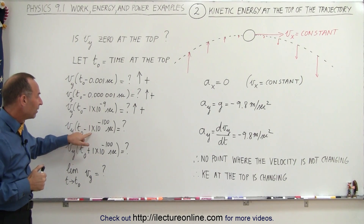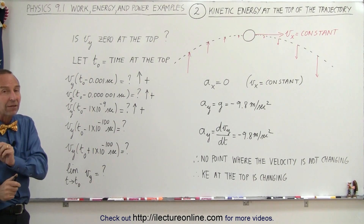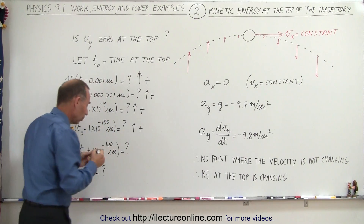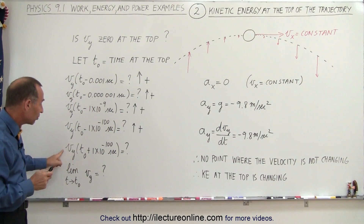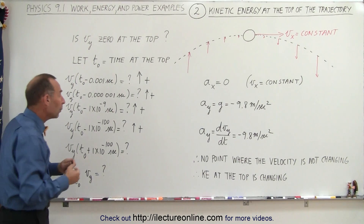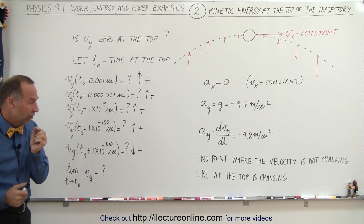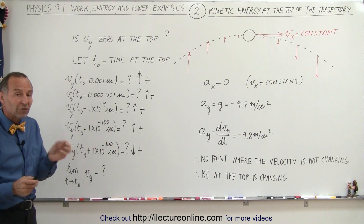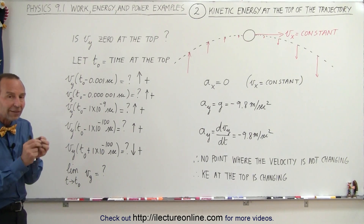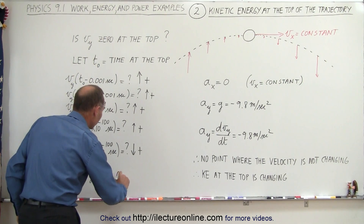What if we look at the velocity one billionth of a second before it reaches the very top? It's still going upward, so the velocity in the y direction is still positive. What if we look at it one times ten to the minus one hundred seconds prior to reaching the very top? You haven't reached the top yet, so the velocity should still be moving upward — a very very small amount, but still going upward. And then if we look at the velocity in the y direction one times ten to the minus one hundred seconds after it has reached the top, now it's on the way down and the velocity is downward. In the limit as t approaches t-naught, when the time becomes equal to t-naught, the velocity in the y direction at that point will be equal to zero.